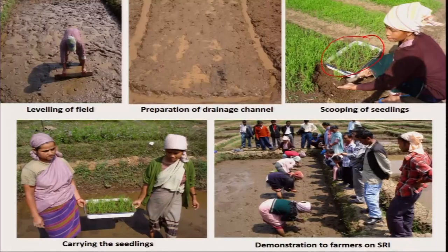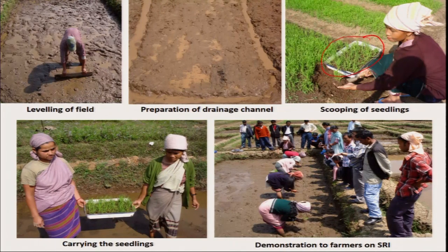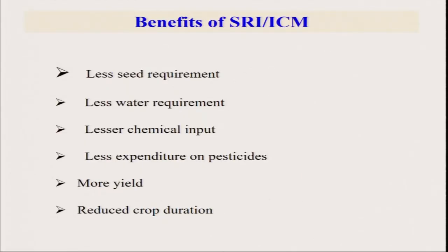Farmers are being shown firsthand how to grow rice — how laborers are planting rice in lines in experimental farms. The benefits include: less seed requirement. In conventional farming it is 30–40 kg per hectare; in SRI it is only 5–7 kg; while in ICM it is 10–12 kg. So there is enough seed saving.